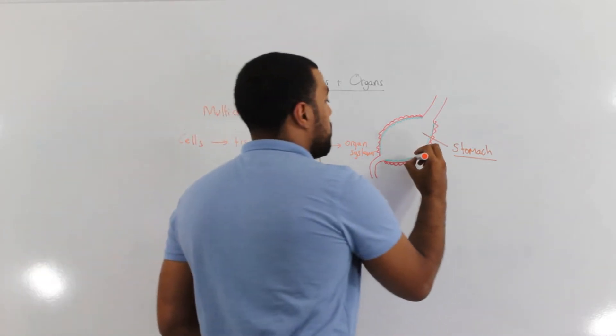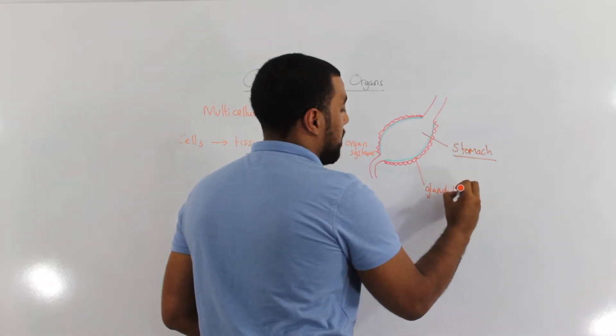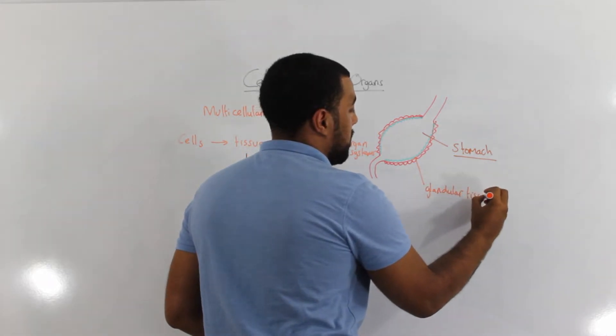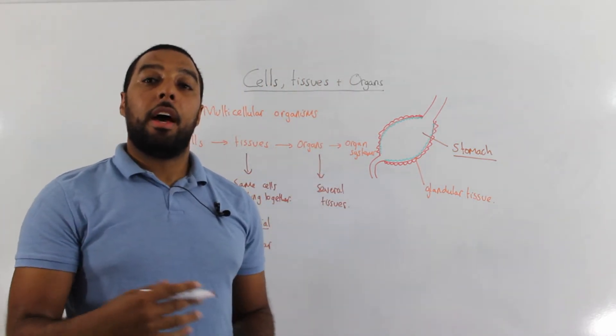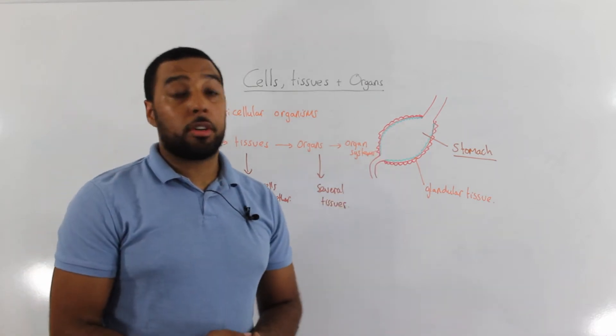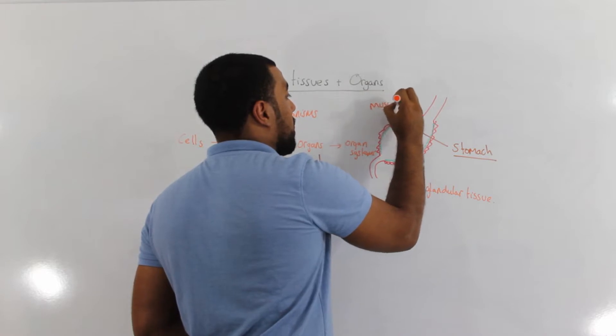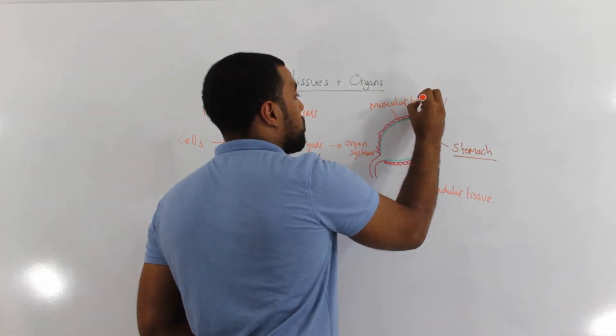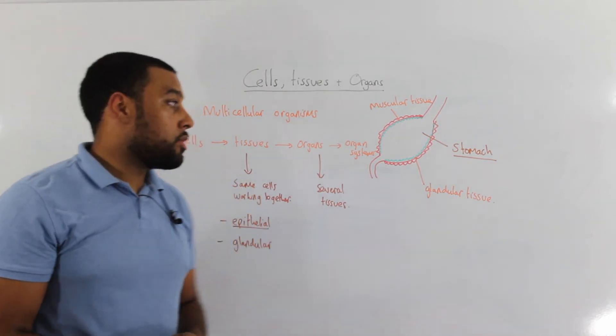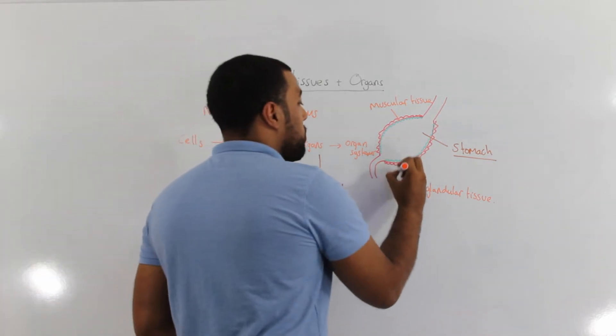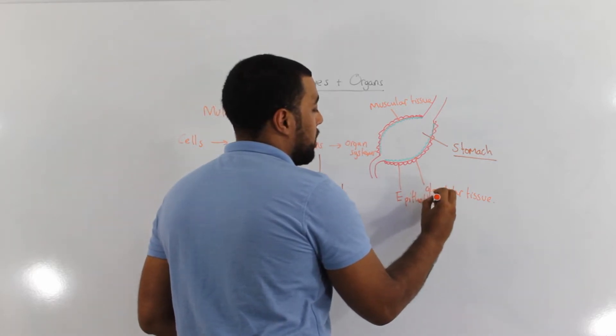One of those tissues is the glandular tissue. Remember, this glandular tissue is responsible for secreting hormones and enzymes into the stomach. We also have muscular tissue in the stomach because that tissue is what churns our food during digestion. And the stomach will be lined with this epithelial tissue.